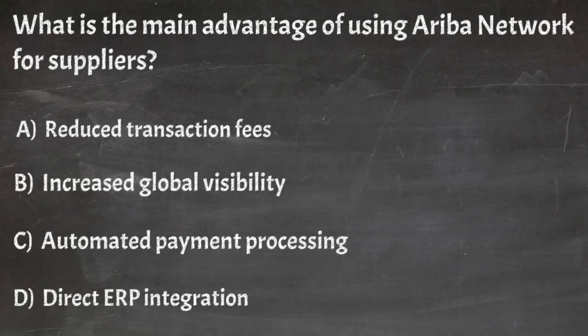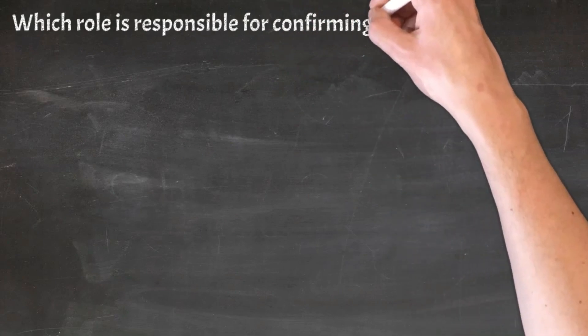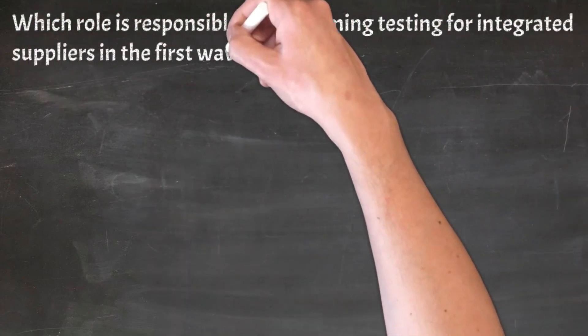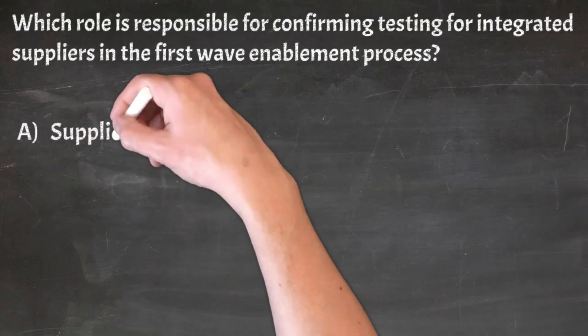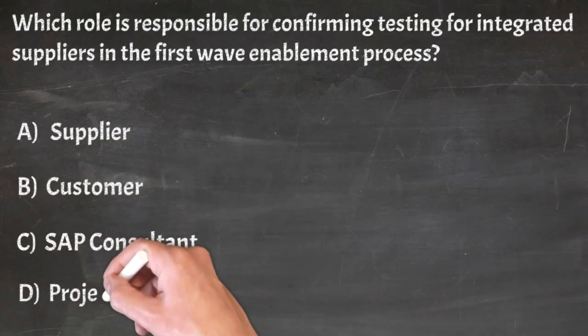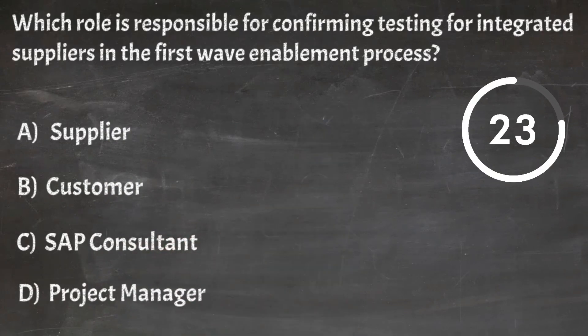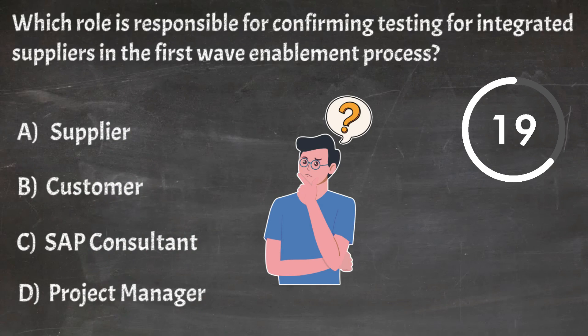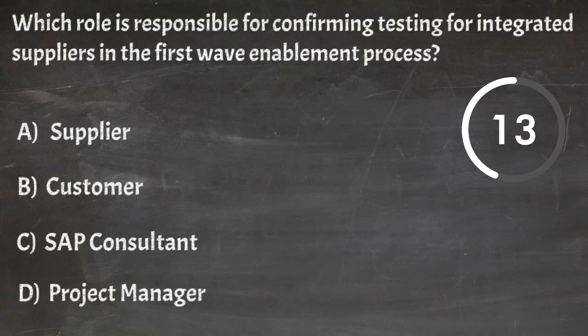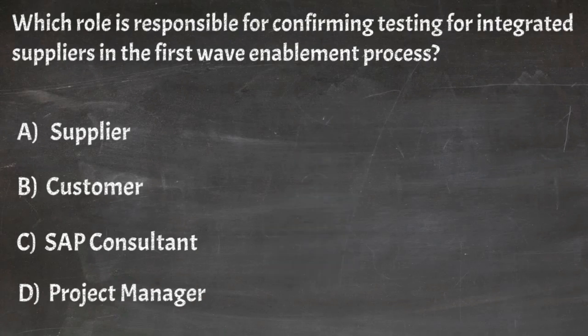Correct answer: B. Increased global visibility. Question 27: Which role is responsible for confirming testing for integrated suppliers in the first wave enablement process? A. Supplier, B. Customer, C. SAP consultant, D. Project manager.